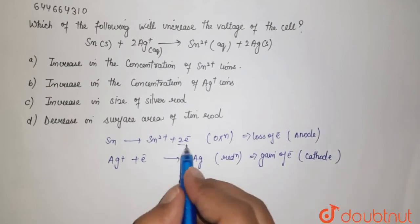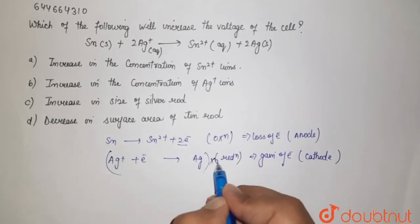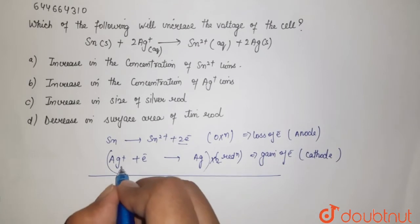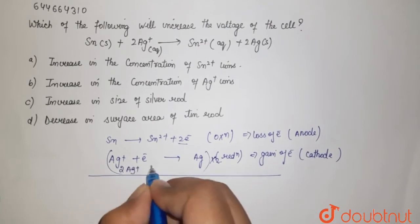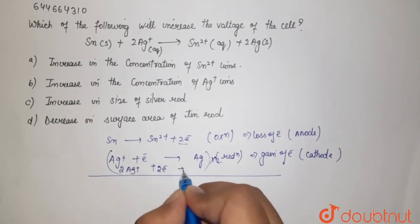Now if you see there are two electrons here and one here, so we have to multiply it with two. So it becomes 2Ag plus plus two electrons gives you 2Ag.